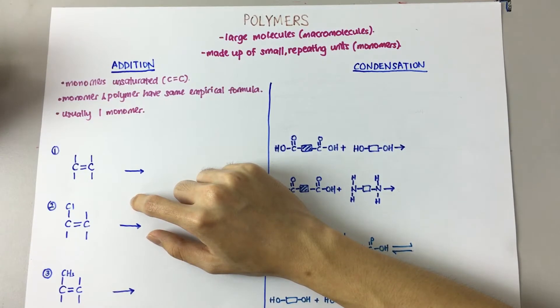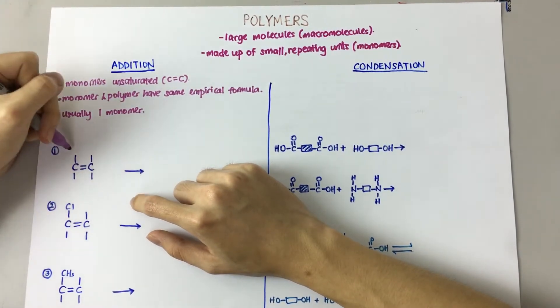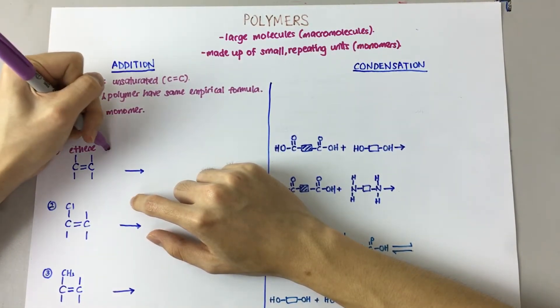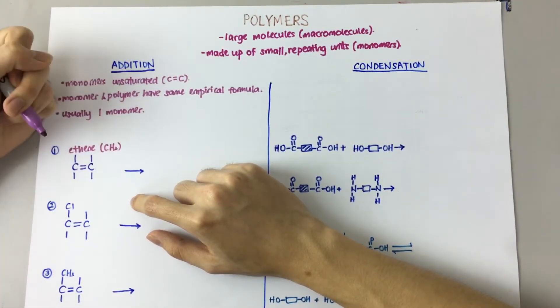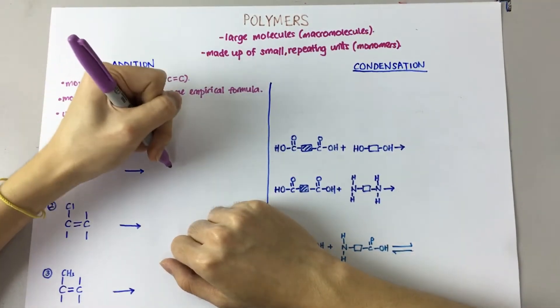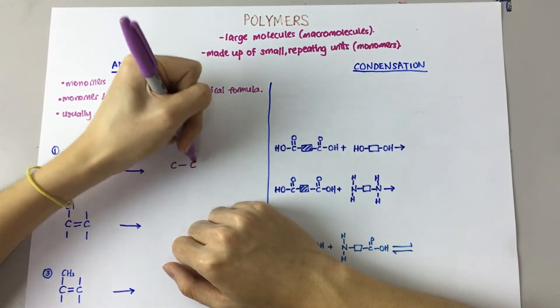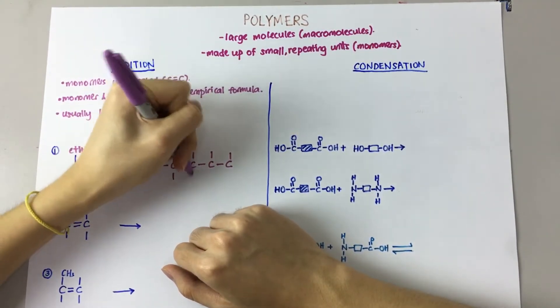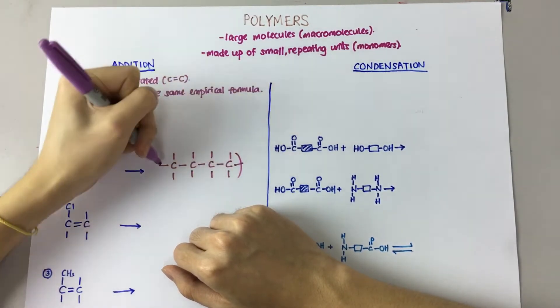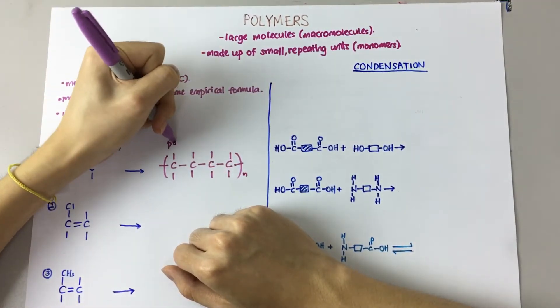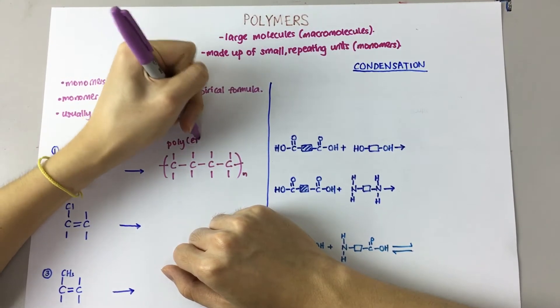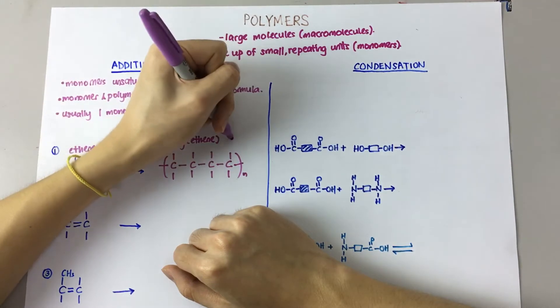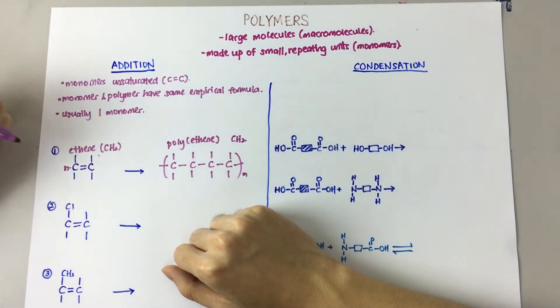Now let's look at some examples. First one here we have ethene, and the empirical formula here is CH2. What happens when it becomes a polymer? So, the double bond opens up, and you get a polymer that you call polyethene. And here, the empirical formula is also CH2.